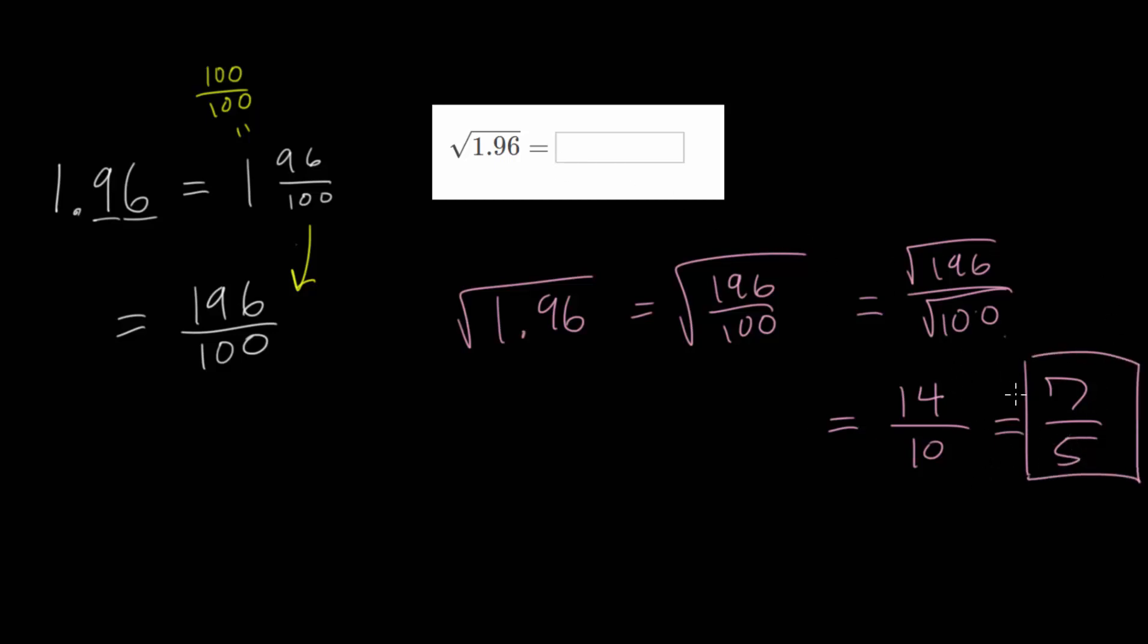And if we want, we can even write this as a decimal, since actually in this step, it'd be easier. We have 14 tenths, or this is 1 and 4 tenths if we want to write it as a mixed number. And we have 1 for our whole part and 4 tenths. So 4 would go in the tenths place.